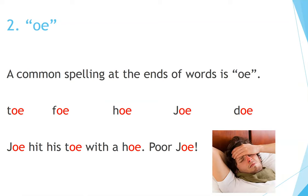Number 2: OE. A common spelling at the ends of words is OE. Examples: Toe, Foe, Hoe, Joe, Doe. Joe hit his toe with a hoe. Poor Joe.